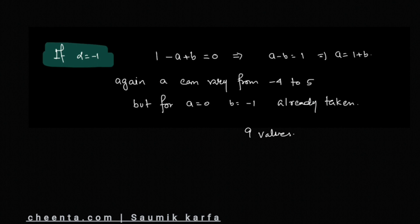So the total number of ordered pairs will be 6 + 9 + 9, which makes 24 values, and that is our final answer. Thank you for watching, we will meet in the next video.